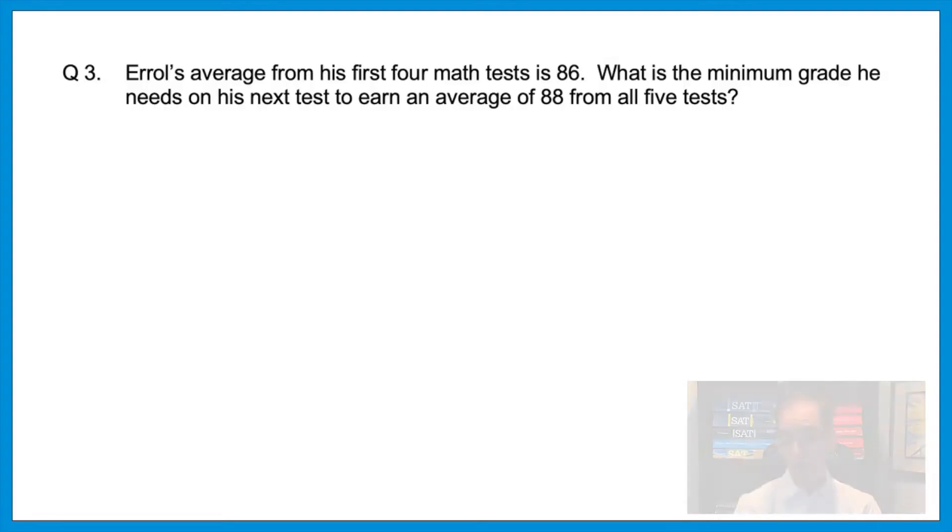Let's see what I mean by formula manipulation. Here's a question that you could very well see on either test. Question 3. Errol's average from his first 4 math tests is 86. What is the minimum grade he needs on his next test to earn an average of 88 from all 5 tests? So what you want to do is start by writing a formula down. This helps give you a visual of how all the pieces can then plug in. Average equals the sum of the terms over the number of terms. And now from there, press pause and see what you can figure out.